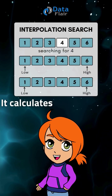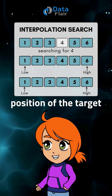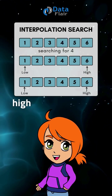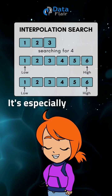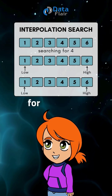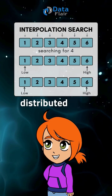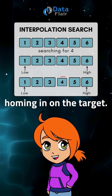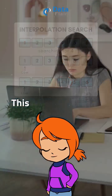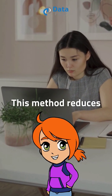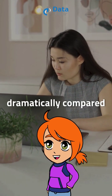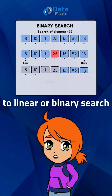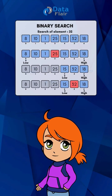It calculates an estimated position of the target based on its value and the array's high and low values. It's especially efficient for uniformly distributed data, swiftly homing in on the target. This method reduces the search area dramatically compared to linear or binary search in the right conditions.